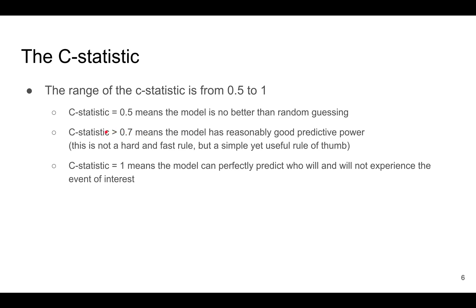So for problems where prediction is easy, you can expect higher C statistics. For problems where there's more randomness and it's harder to predict, the C statistic of the best model will be lower. And if the C statistic is 1, it means the model can perfectly predict who will and will not experience the event.